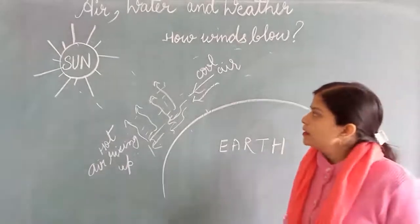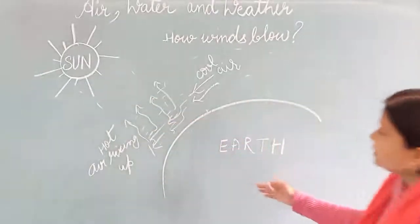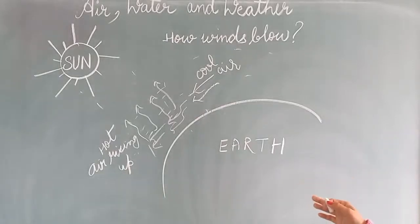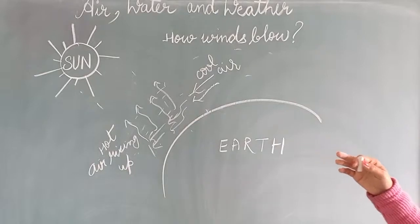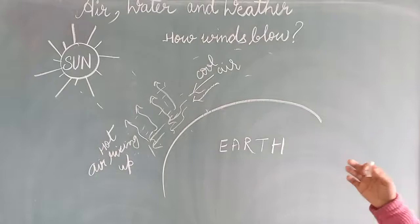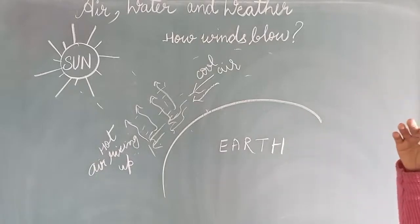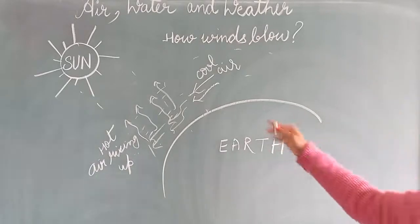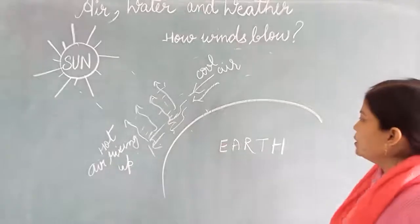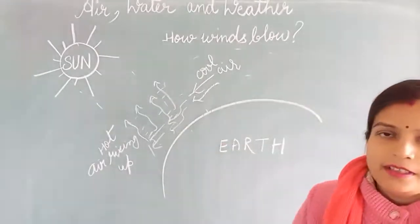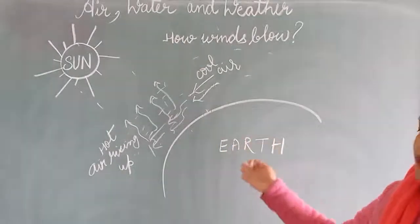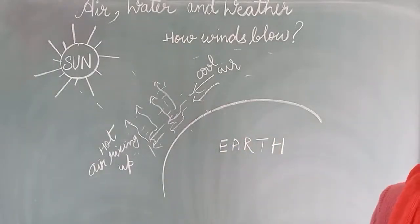So to summarize how winds blow: the sun heats the earth's surface and the air above the land also gets heated. The heated air becomes light and rises up, and the cool air rushes in to take its place. This causes the wind to blow. In other words, uneven heating of the surface of the earth creates winds.